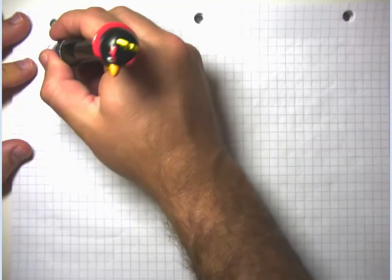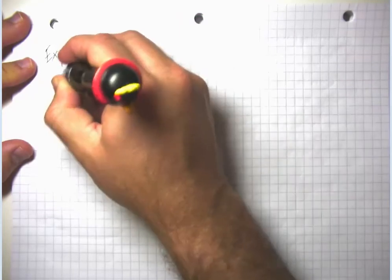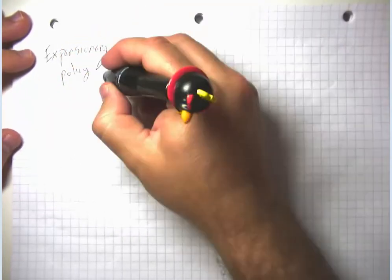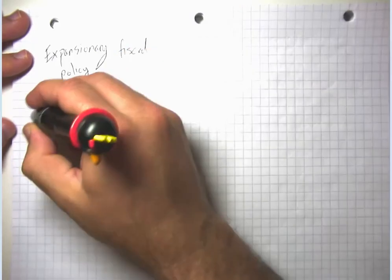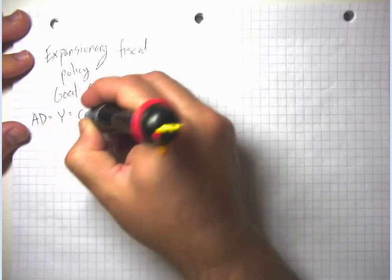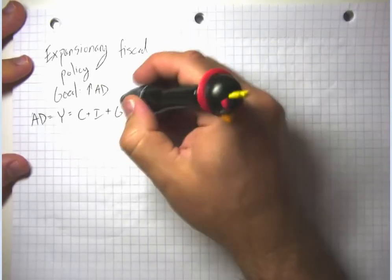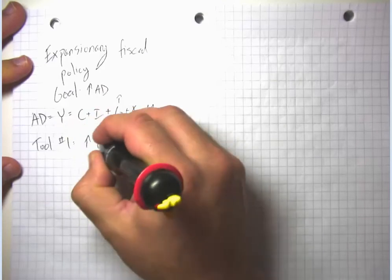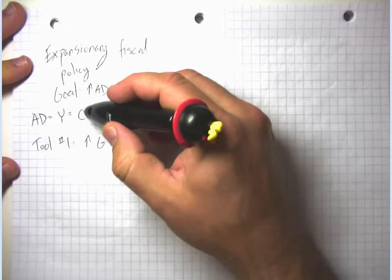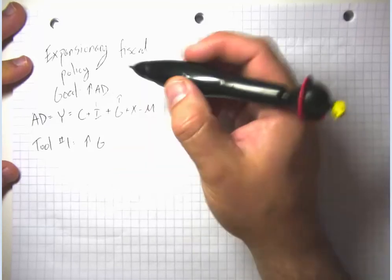If we want an expansionary fiscal policy, its goal is increasing aggregate demand. Remember that aggregate demand equals GDP, which equals consumption plus investment spending plus government spending plus exports minus imports. So if we want to increase aggregate demand, we can increase government spending — that's tool number one. Or if we cut taxes, we will probably increase people's consumption spending, and depending on what type of taxes we cut, maybe investment spending as well.